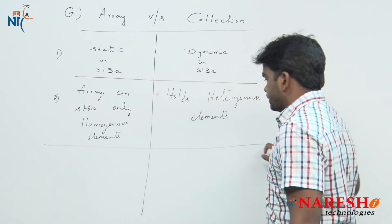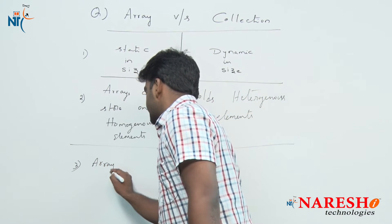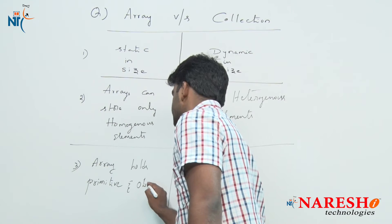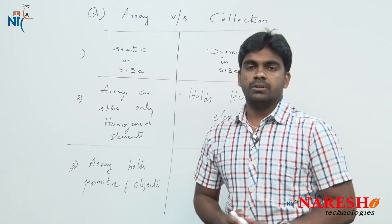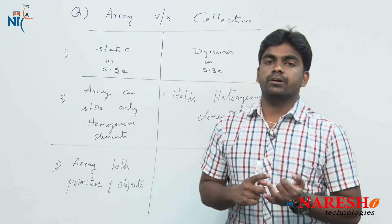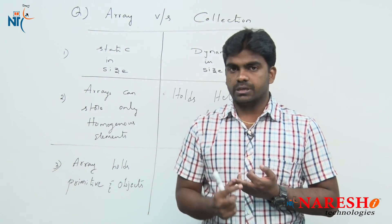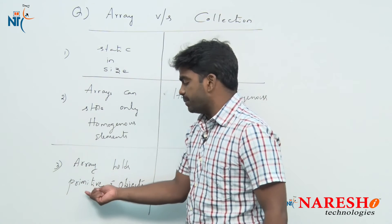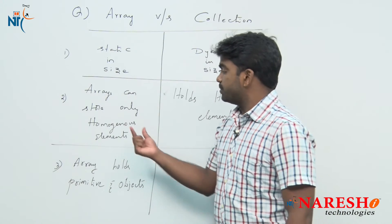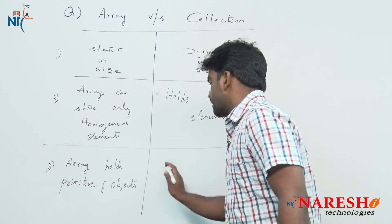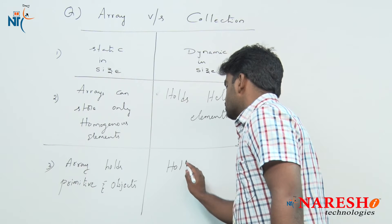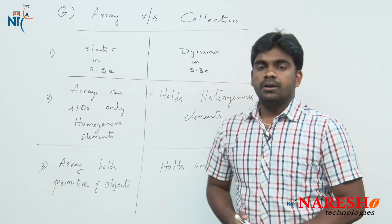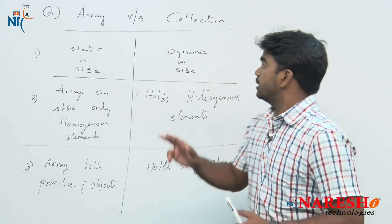The third difference: arrays can hold both primitive data as well as objects. There are arrays of objects, arrays of primitives, and arrays of strings — and of course, String is also an object in Java. You can declare an array variable that holds either primitive data or object data, but it must be of the same type. Collections, however, hold only objects — we cannot store primitive data in a collection object.